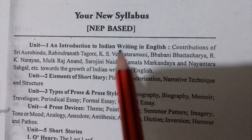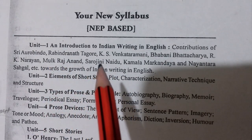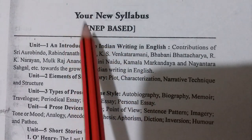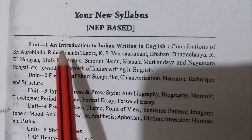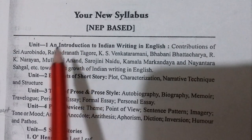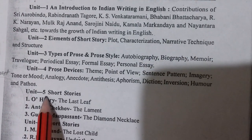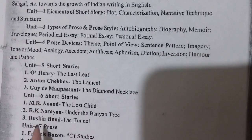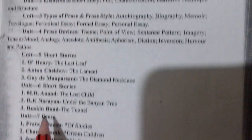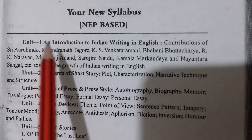This is the new syllabus of English Literature for BA first year students. The semester system has come in this year and the whole syllabus is based on the New Education Policy. In the very first paper there will be only one paper with nine units: unit first through unit ninth. The questions will be based on all these different units.